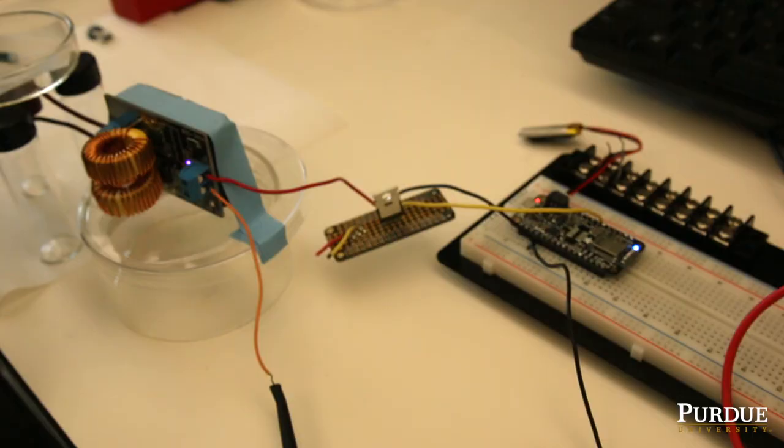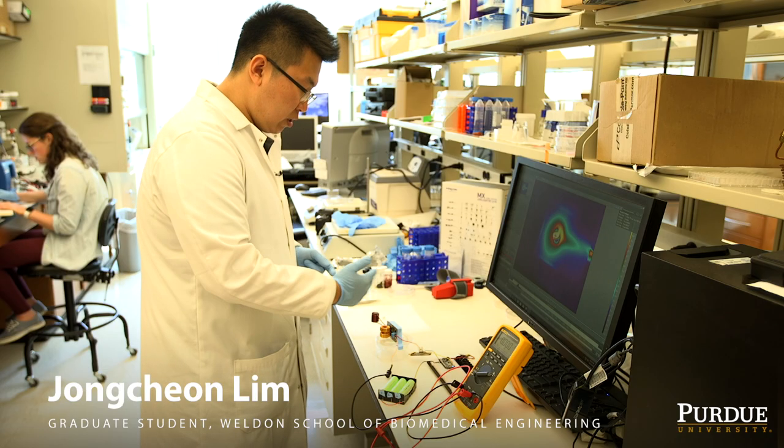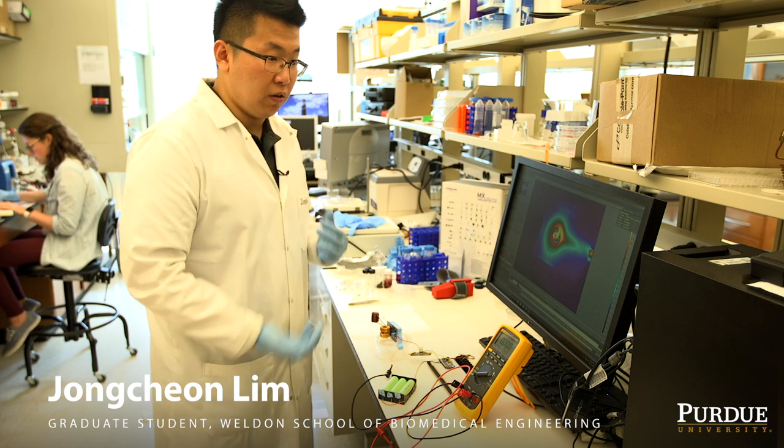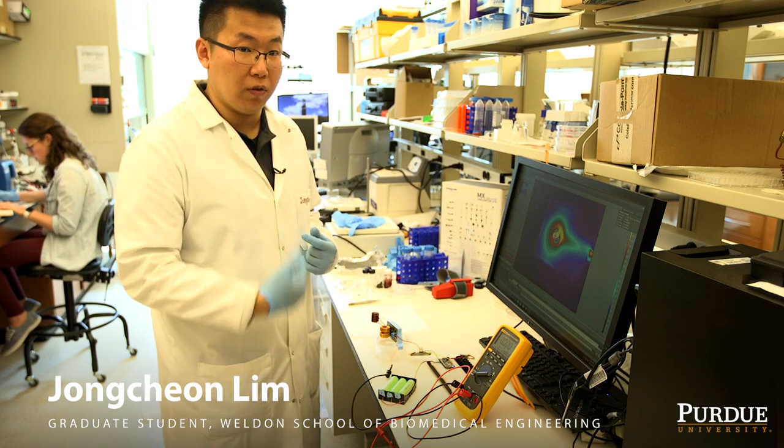The microcontroller gets a signal from the ECG, your heart rate, and then it will turn on the activation device. And this activation device will give alternating magnetic field, which is very rapidly changing magnetic field.